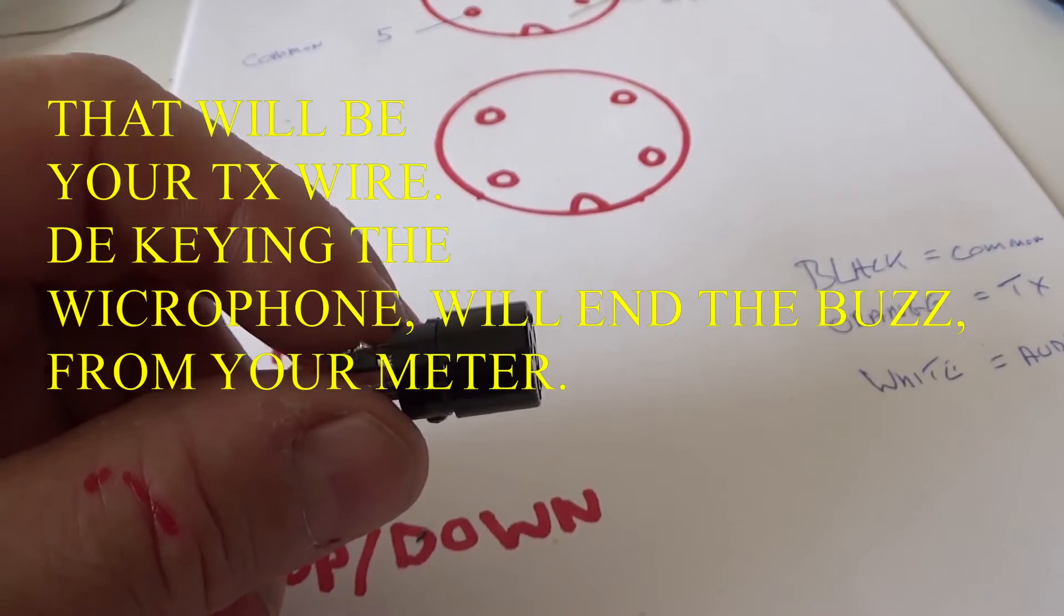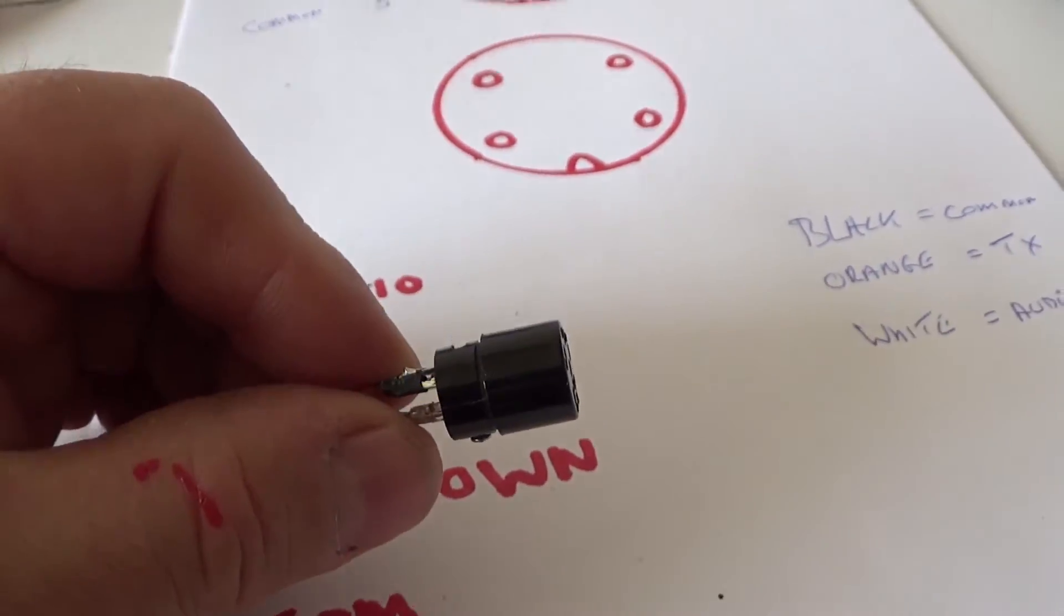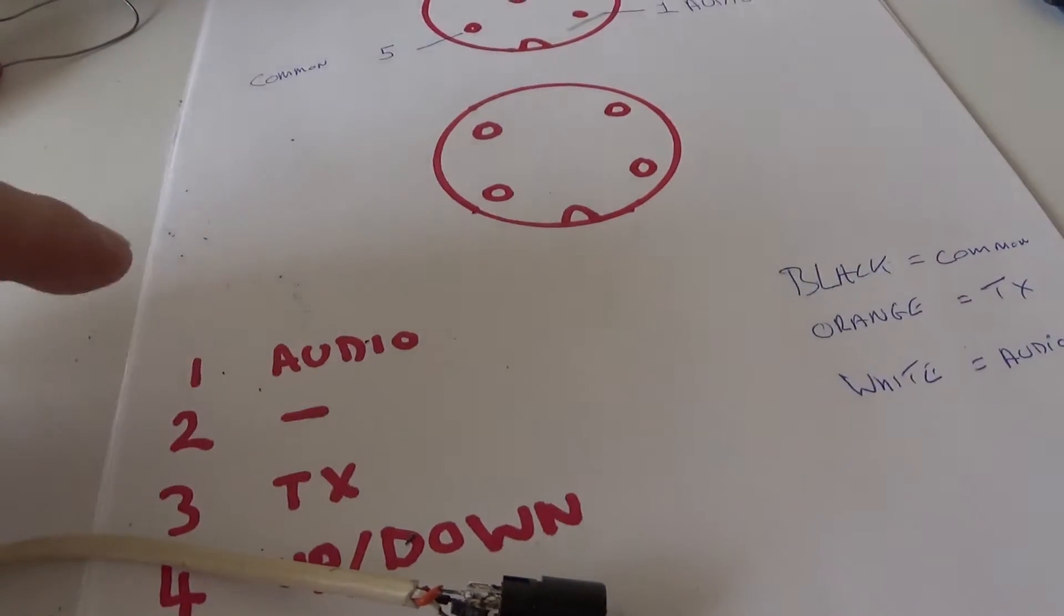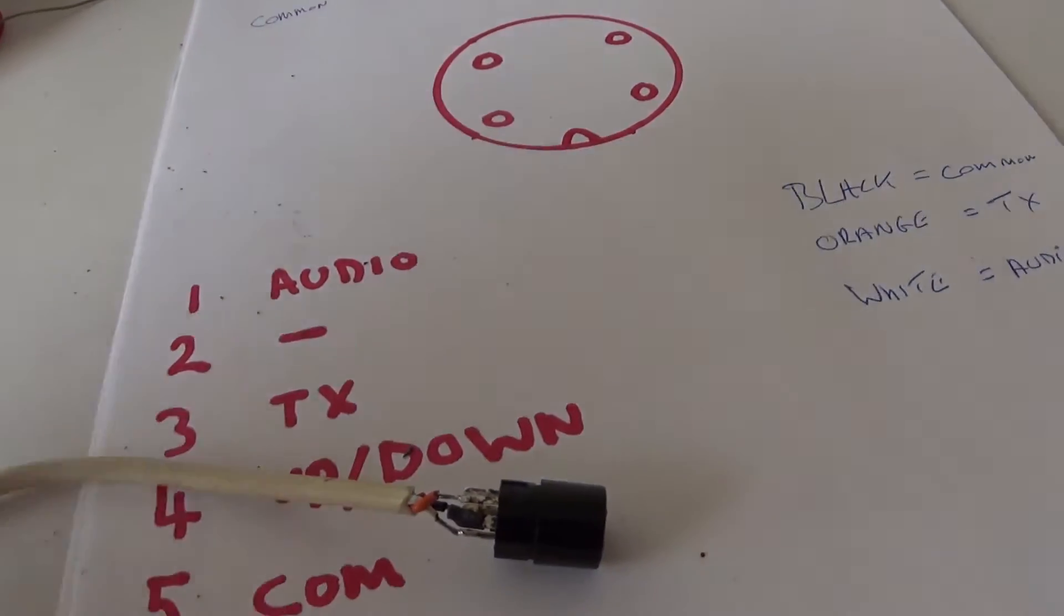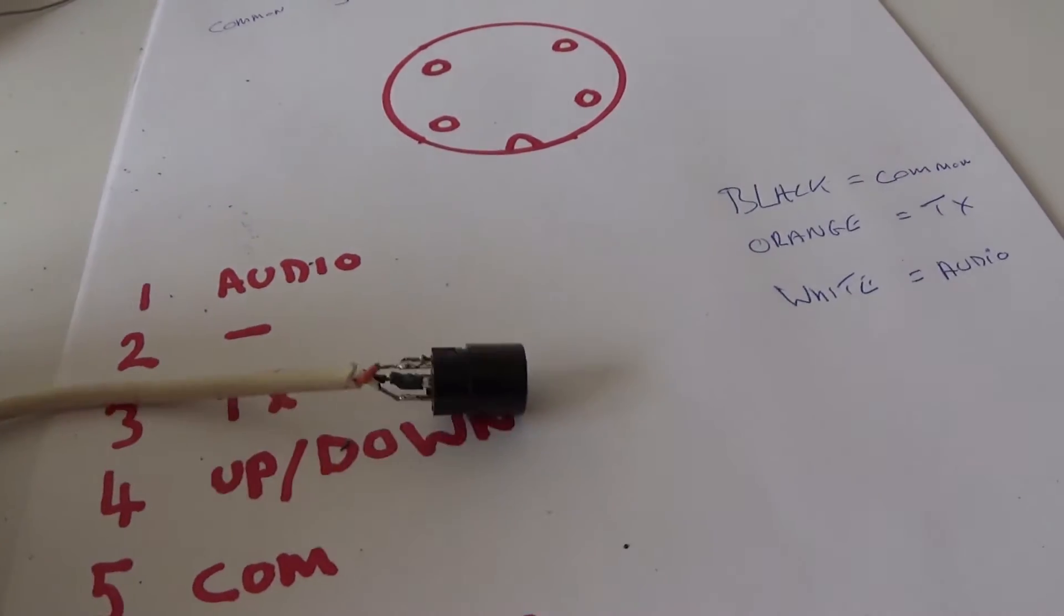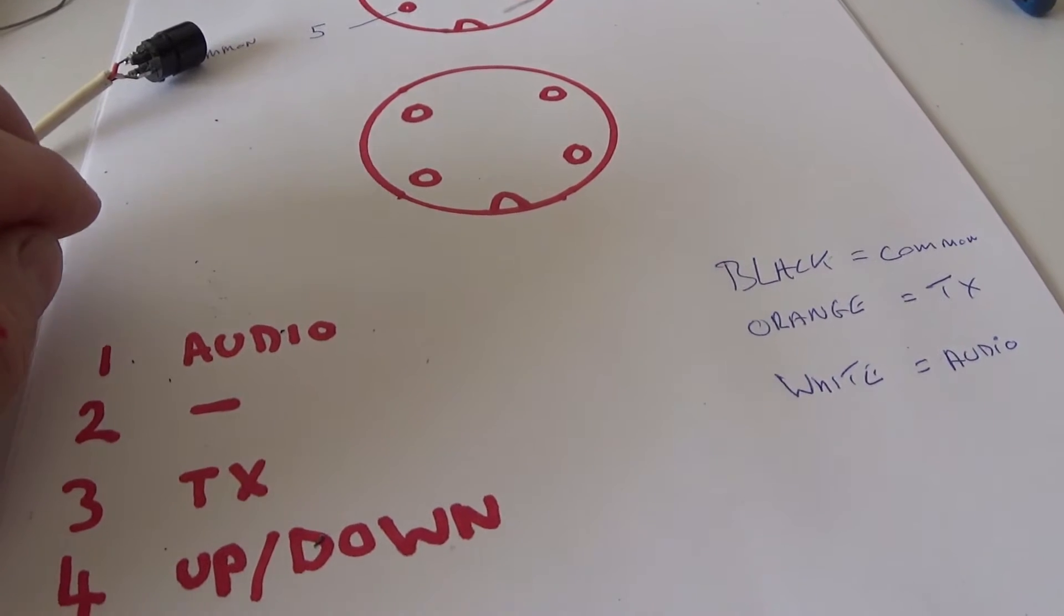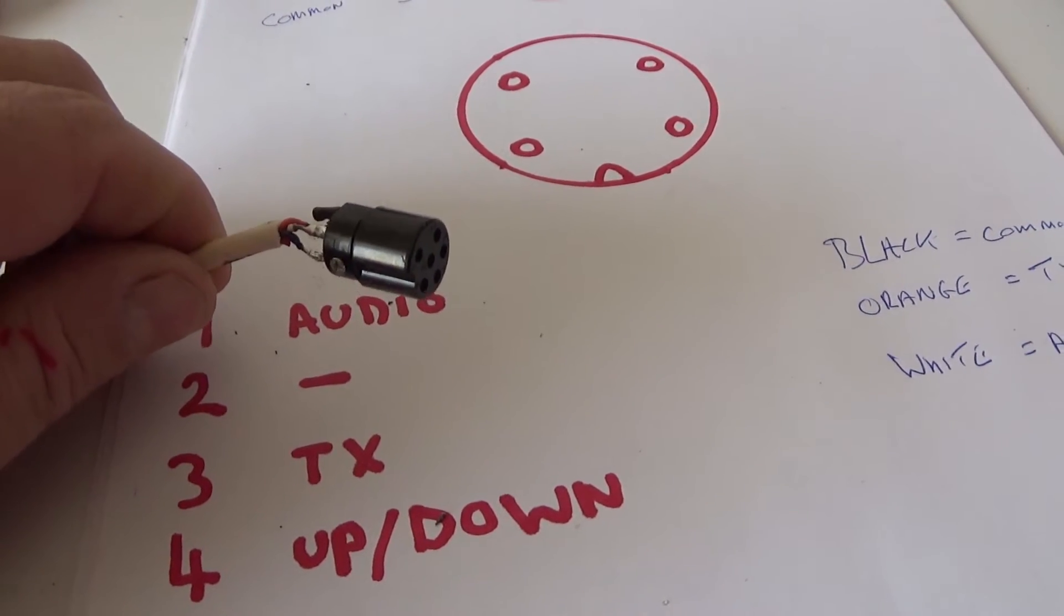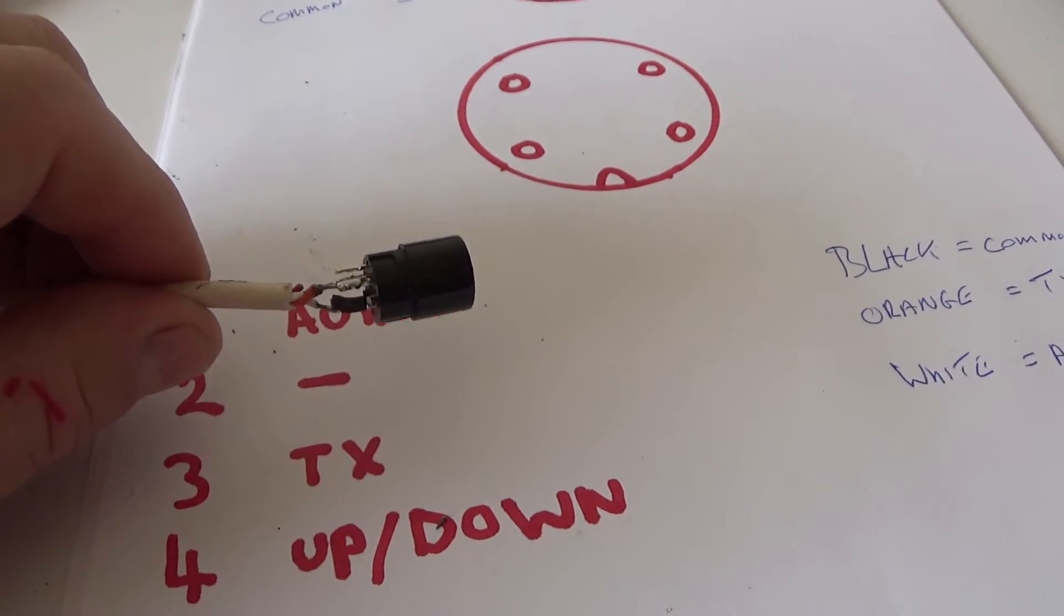Put one probe in your common pin and then work your way around the back of the plug while keying the mic until you get the circuit. Your buzzer goes off or if you've rigged up a battery and a light, the light will come on. Let go of the mic, circuit's broken. Key the mic, the circuit's made again. Your light comes on or your buzzer goes off. So straight away you know that the other wire to your common is your TX, then you can write that down.